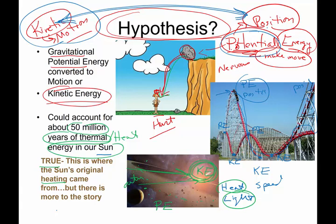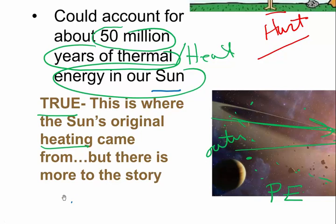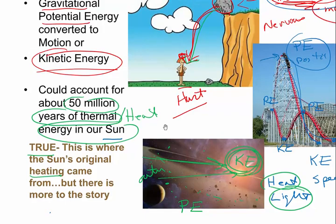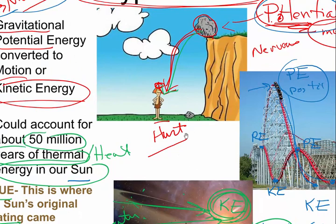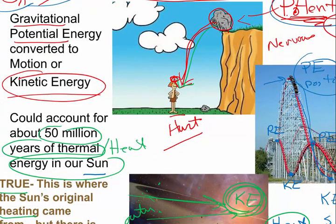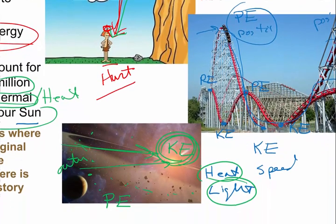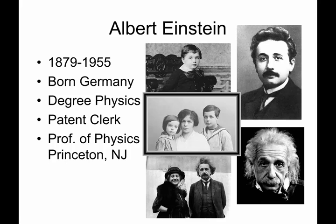But we are pretty certain due to lots of different observations that our star is about 4.5 billion years old. Well, if our star is 4.5 billion years old, then how is this going to account for what's going on? Well, that's not the only or entire story. Here's the rest of the story.